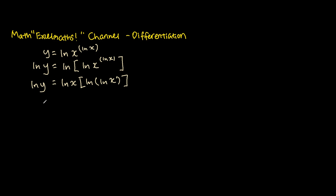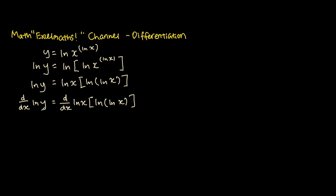The next step is to perform implicit differentiation by differentiating both sides with respect to x. For the left-hand side, because we are differentiating with respect to x in terms of y, we differentiate ln y first, giving 1 over y, and we also attach dy over dx.